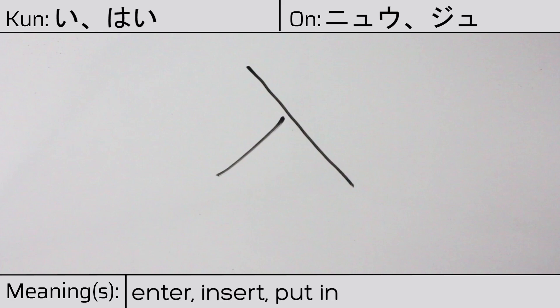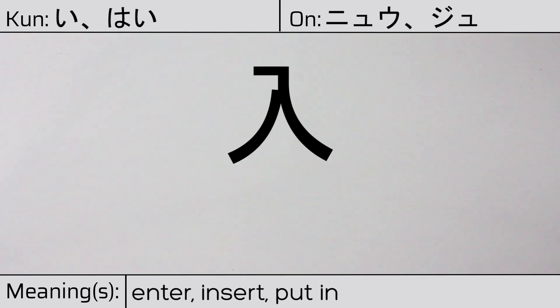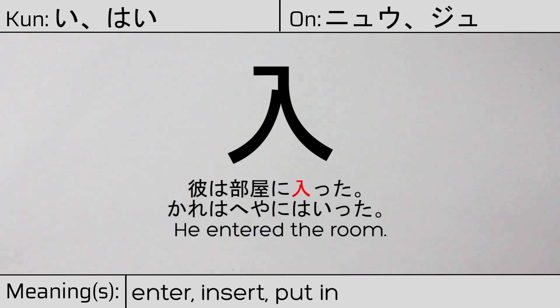You can remember this kanji by the fact that it is written in the opposite direction to hito. Our example sentence is: 彼は部屋に入った — He entered the room.